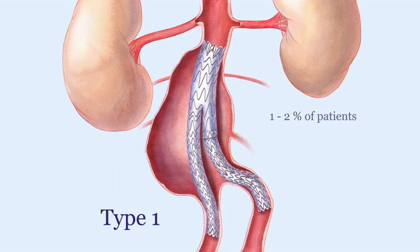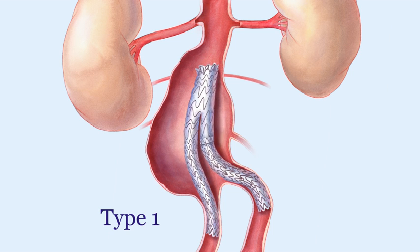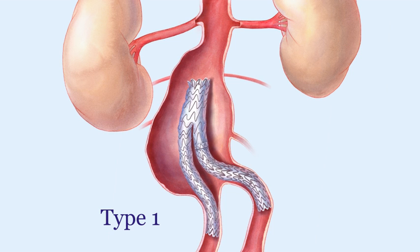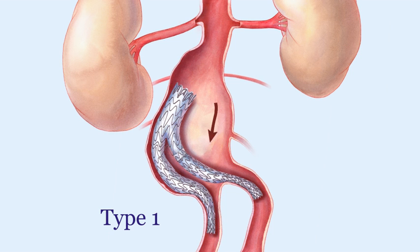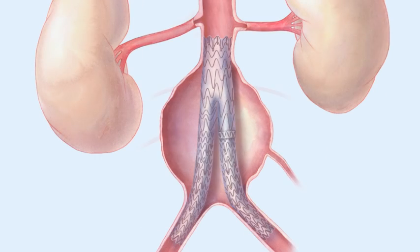Type 1 endoleaks affect approximately 1-2% of patients and occur when an ineffective seal at the top or bottom edge of the stent allows blood to flow into the aneurysm sac directly from the aorta. This is usually due to stent migration, and occasionally the stent can completely detach and fall into the aneurysm. The treatment for this complication is either the introduction of a new stent or the repair of the aneurysm via open surgery.